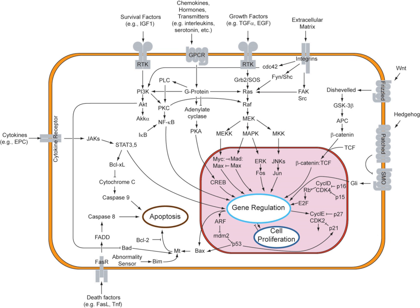Intracrine signals are produced by the target cell and stay within the target cell. Autocrine signals are produced by the target cell, are secreted, and affect the target cell itself via receptors. Sometimes autocrine cells can target cells close by if they are the same type of cell as the emitting cell; an example of this are immune cells. Juxtacrine signals target adjacent, touching cells, transmitted along cell membranes via protein or lipid components integral to the membrane. Paracrine signals target cells in the vicinity of the emitting cell; neurotransmitters represent an example. Endocrine signals target distant cells; endocrine cells produce hormones that travel through the blood to reach all parts of the body.